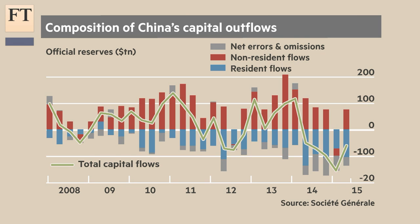The second thing is the narrow net errors and omissions. This is an interesting one because we don't really know what that is at the end of the day, but what we do observe is that historically it correlates quite well to currency movements, which does suggest that it is flows that are looking to react in response to currency movements. The third element is what households in particular are doing, and what we see is that Chinese households are looking to invest abroad at this point in time.